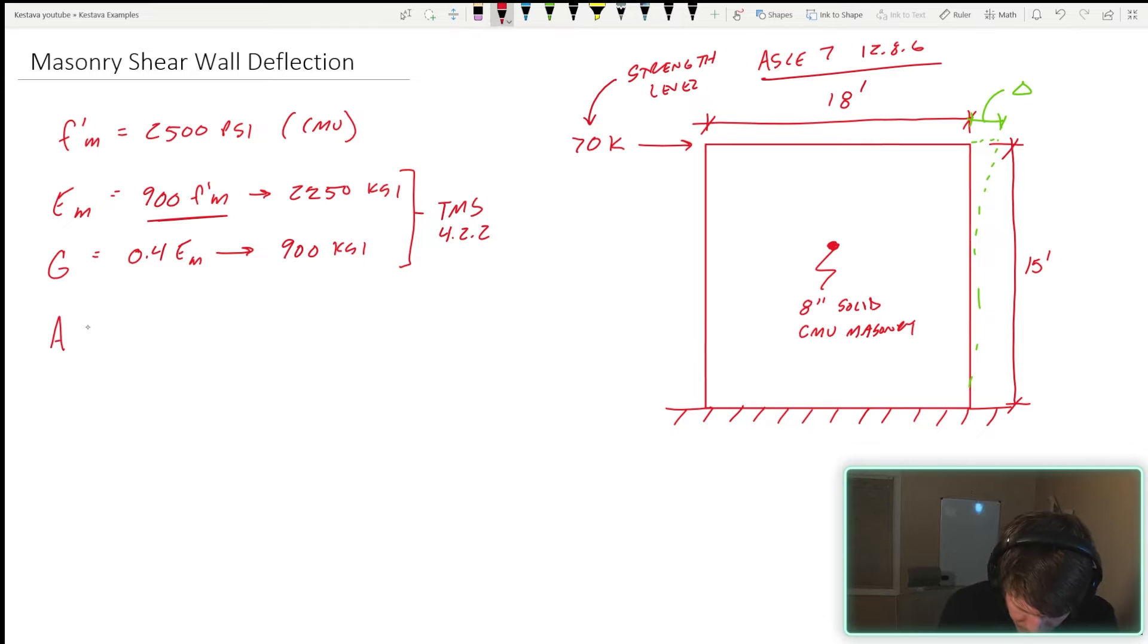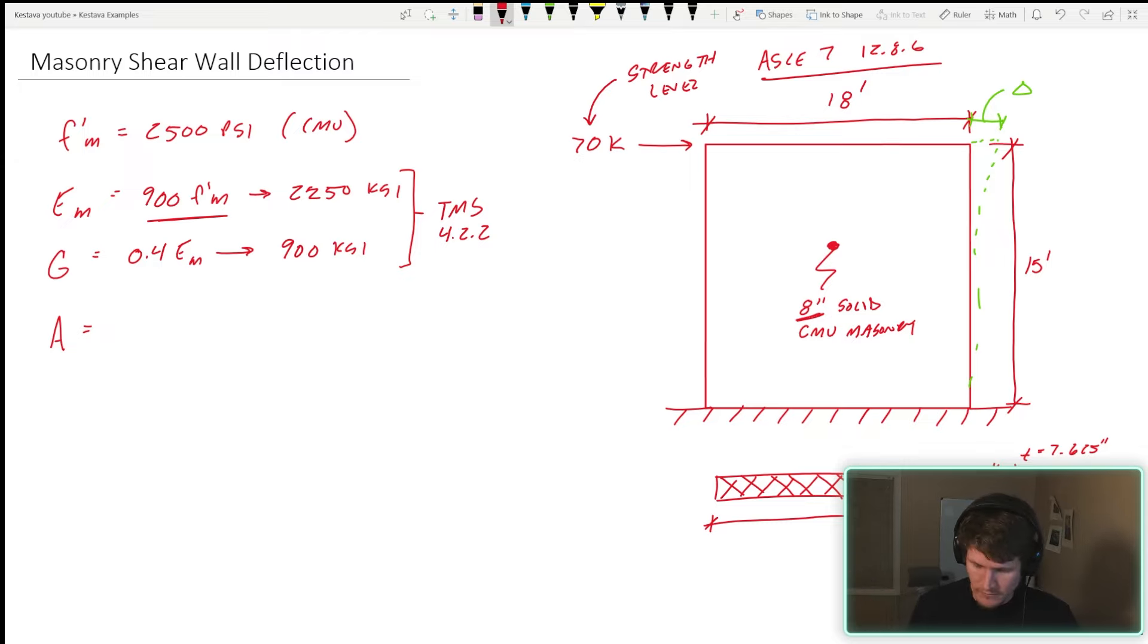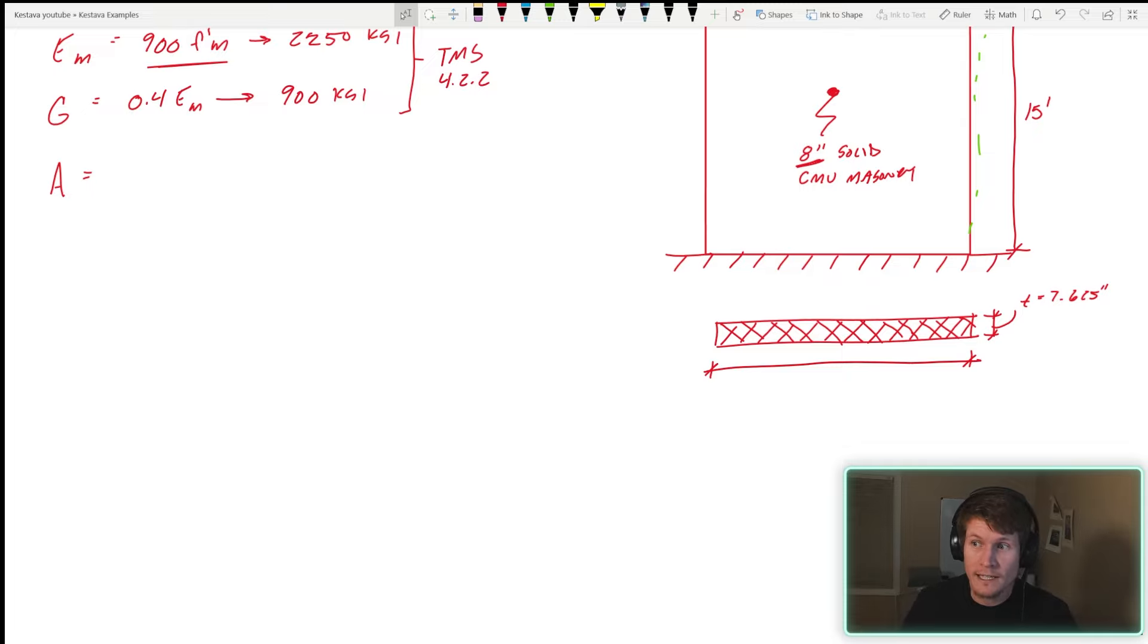The next thing we need is the cross-sectional area of our wall. We have an 8-inch solid masonry wall that is not truly 8 inches. With masonry, an 8 inch is actually 7.625 inches. Why that is I actually don't know, but it's the same thing for every type of block. If you go 12-inch block it's 11.625. You cannot just say it's an 8-inch block and use 8 inches. That would be under-conservative for an engineer and is the incorrect way to go about your analysis. So you have to be that precise.